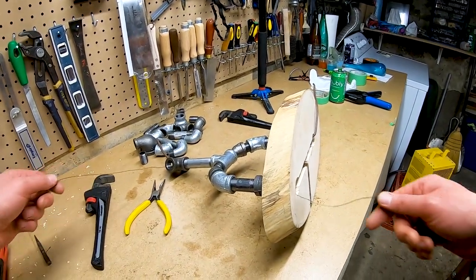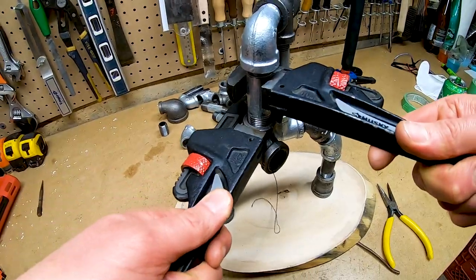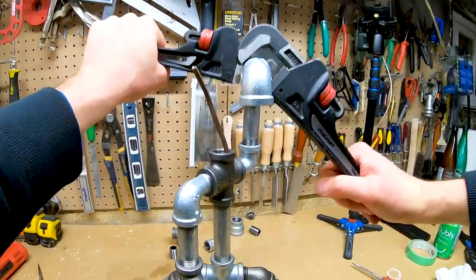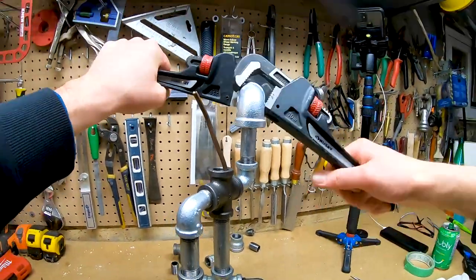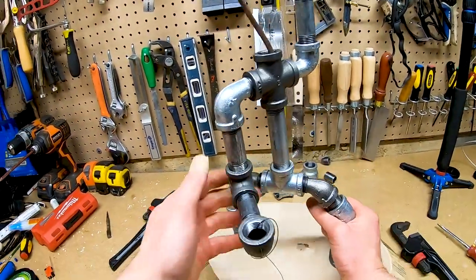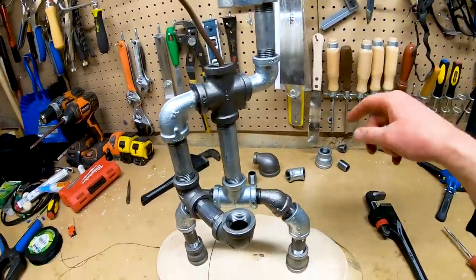Moving forward, we build one arm going down using street 90s, nipples, and elbows, passing the string through each fitting as we go. Moving to the other arm, we use the exact same fittings, only we angle the arm up instead of down. You'll notice that the four-way cross fitting is angled about 20 degrees off center. The goal is to position the hands of the robots directly above and below each other.